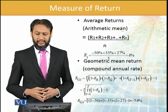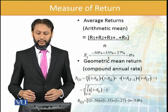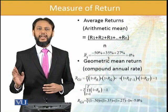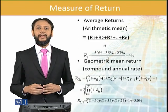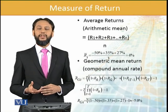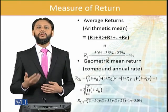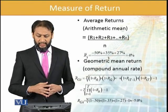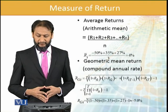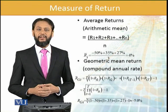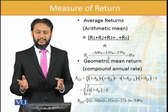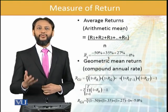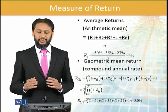For average return, we take the returns of the whole period — n number of periods — divided by n, and that gives you the average return. This is the simple average that we normally calculate in mathematics. So here, if we have −50%, then +35%, and +27% — these are 3-period returns — divide by 3 and you get an average return of 4%.